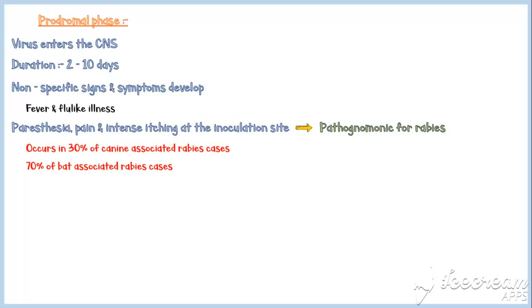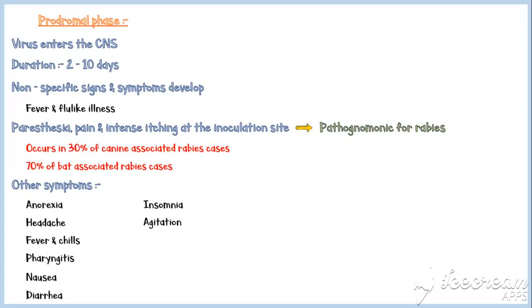Other symptoms in the prodromal phase include anorexia, headache, fever and chills, pharyngitis, nausea, diarrhea, insomnia, agitation, and depression.